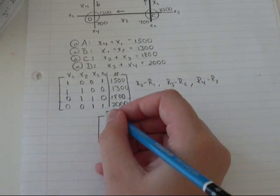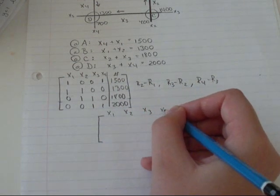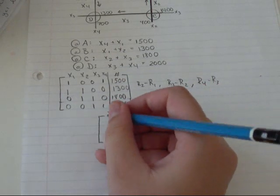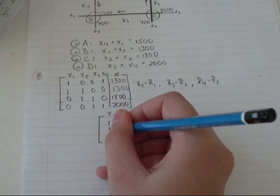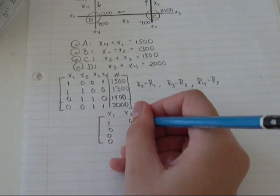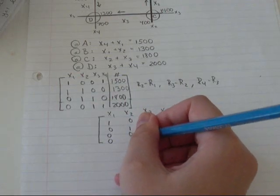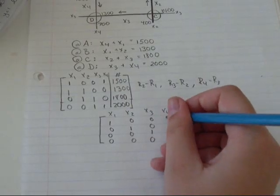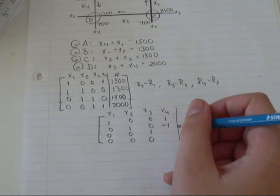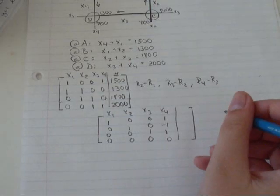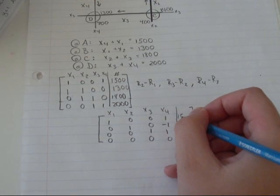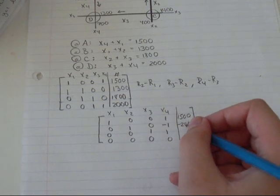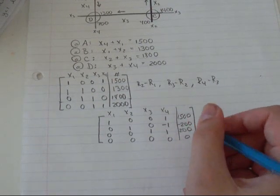I've got X1, X2, X3, X4 and I got 1, 0, 0, 0, 0, 1, 0, 0, 1, 0, 1, 0, 1, 0, and I got 1,500 and then negative 200, 2,000, and 0.